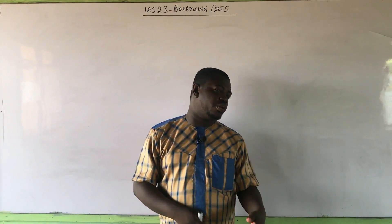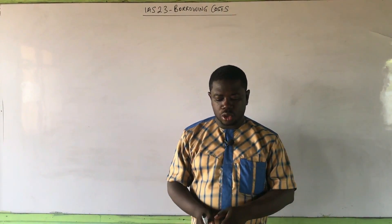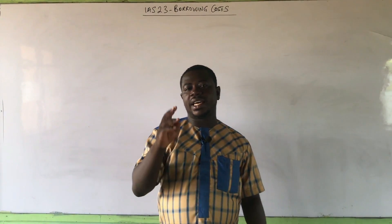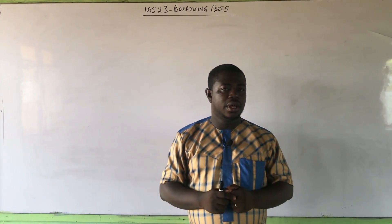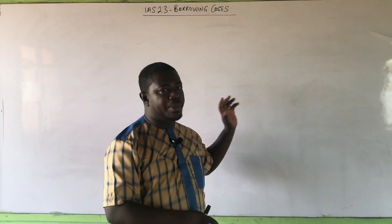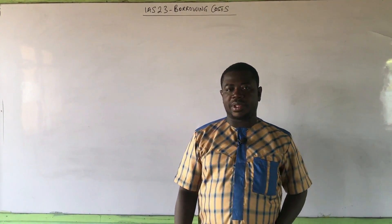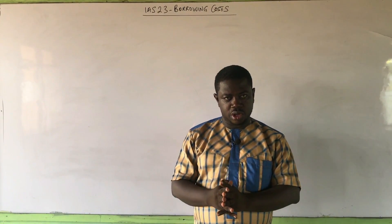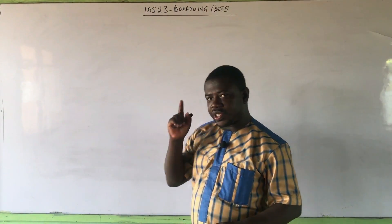If there is anything there that is not supposed to be part of borrowing costs, don't be tempted. Going back to the question, we are told that they financed it by two sources: they issued bonds and they issued share capital. Remember that in the scope of IAS 23, share capital and its costs are not part of borrowing costs. So even though it comes with a cost of capital of 14%, don't be tempted — it's just there to confuse you. Your objective is to calculate borrowing costs, so your focus should be on the components of borrowing costs.